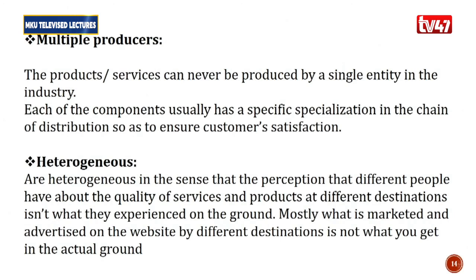Next is multiple producers. The products and services can never be produced by a single entity in the industry. Each component usually has a specific specialization in the chain of distribution to ensure customer satisfaction. National parks, for example, cannot be independent — they need operators to bring visitors, hospitality facilities for accommodation, and banking services for tourists to pay entry fees. Multiple producers means the tourism industry has many producers providing different services before the final service is rendered to the tourist.